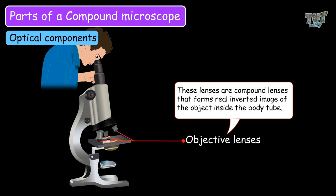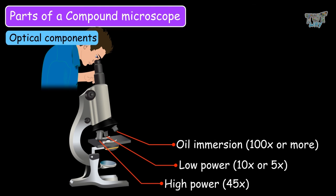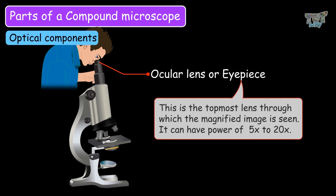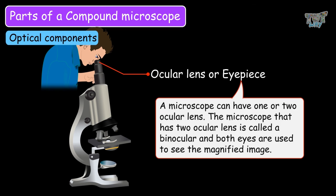The objective lenses are compound lenses that form real inverted images of the object inside the body tube. There are three types of objective lenses, and all of them are attached to the nose piece of the microscope. The ocular lens, or eyepiece, is the topmost lens through which the magnified image is seen. It can have a magnification power of 5 to 20. A microscope can have one or two ocular lenses — the microscope with two ocular lenses is called a binocular, and both eyes are used to see the magnified image.